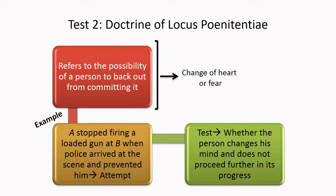The second test — the Doctrine of Locus Poenitentiae — refers to the possibility of a person to back out from the crime he is intending to commit, either due to fear or a change of mindset. Law provides time to repent, presuming that the person shall reconsider and back out. Consider this example: A stopped firing a loaded gun at B when police arrived and prevented him. Here there is no scope for repentance because the police intervened — it was an external intervention that prevented him from committing the crime of firing the loaded gun, i.e., murder.